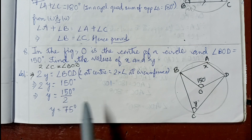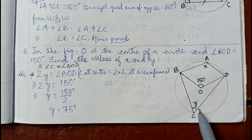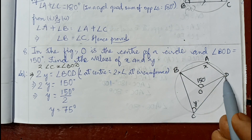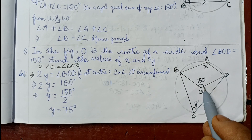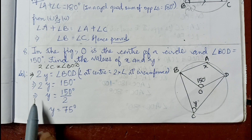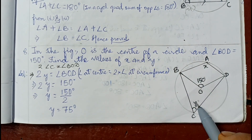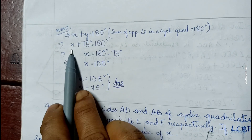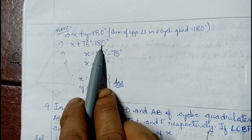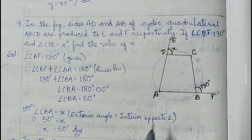Question number eight: O is the center and angle BOD is 150 degrees; find X and Y. The angle at the center is double the angle at the circumference, so twice Y equals angle BOD equals 150 degrees, giving Y equals 75 degrees. Sum of opposite angles in a cyclic quadrilateral: X plus Y equals 180, so X plus 75 equals 180, therefore X equals 105 degrees.